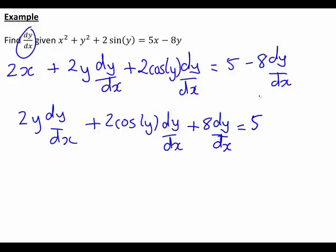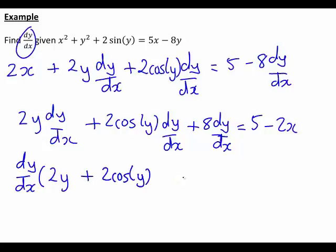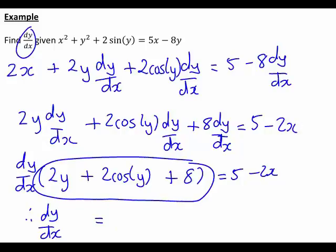On the right-hand side, the 5 stays there, and we also subtract 2x from both sides since it does not contain dy/dx. From here, we simply take dy/dx out as a common factor on the left, since it multiplies each of those terms. Finally, we make dy/dx the subject by dividing both sides by that expression, giving: dy/dx = (5 − 2x) / (2y + 2cos(y) + 8).